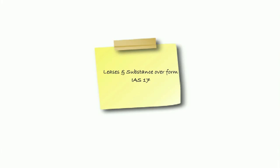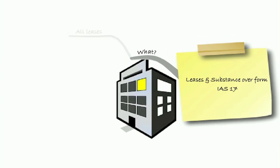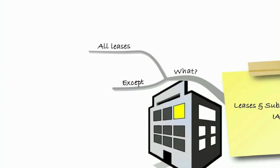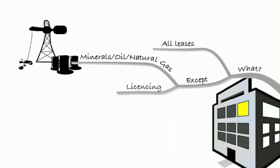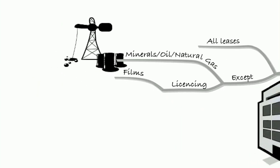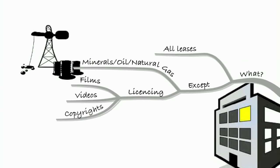Hello and welcome to our recap of IAS 17 Leases, also looking at substance over form. IAS 17 covers all leases except those for minerals, oil and natural gas, and those covering licensing for films, videos and copyrights. All other leases are covered under IAS 17.